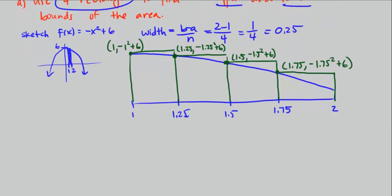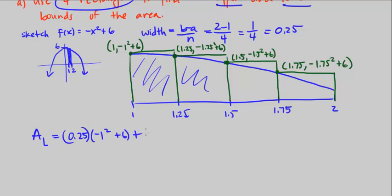So next, I want to find the area using our left endpoint rectangles. And that's the base times the height. So the first rectangle is going to be 0.25 is the base, and the height is the y value of negative 1 squared plus 6.